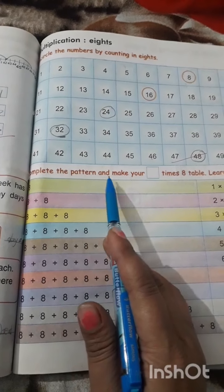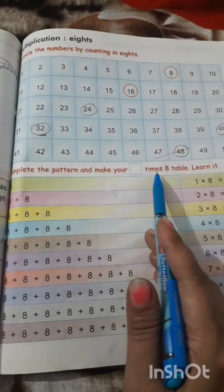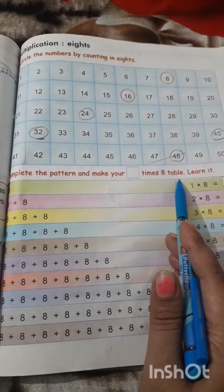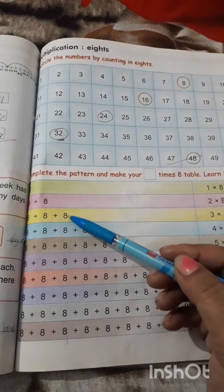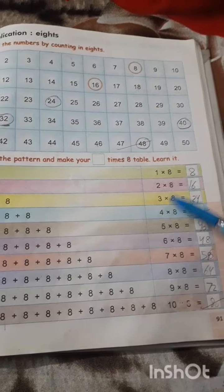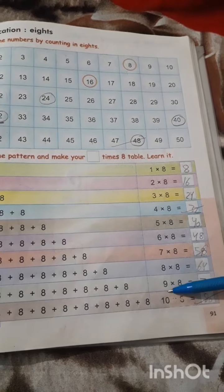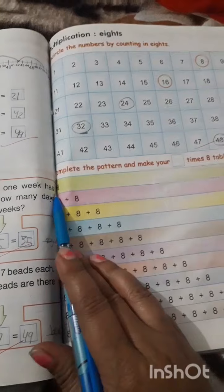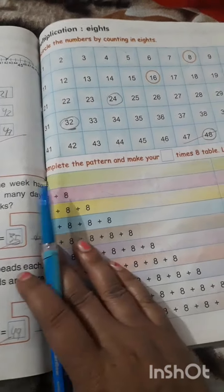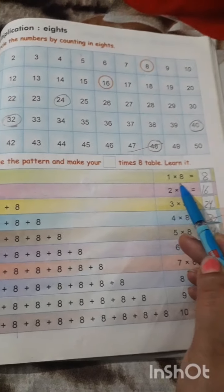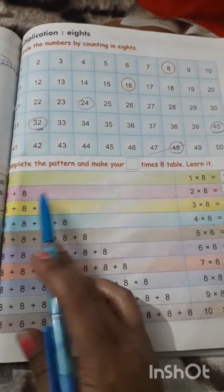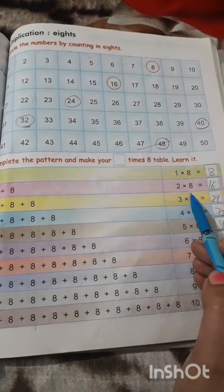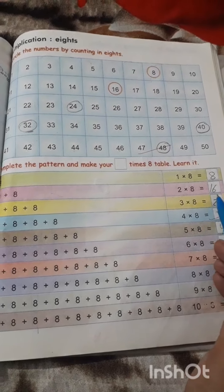Complete the pattern and make your times 8 table, learn it. This is repeated addition. And this is multiplication. How many times 8? 1 times 8. 1 8 is 8. 2 times 8. 2 8s are 16.